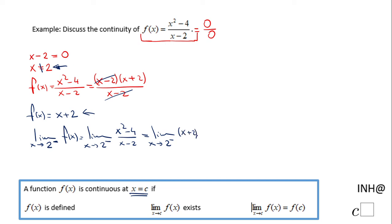We're going to get the same situation for the one coming from the right, 2 plus. It's going to be the same, which tells us the limit exists. The limit when x approaches 2 of f of x is 4. It does exist, so this condition is accomplished.